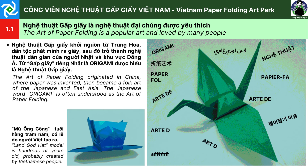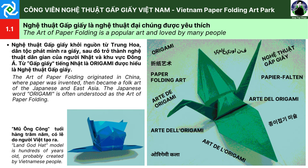1.1. Nghệ thuật gấp giấy là nghệ thuật đại chúng được yêu thích. Nghệ thuật gấp giấy khởi nguồn từ Trung Hoa, dân tộc phát minh ra giấy, sau đó trở thành nghệ thuật dân gian của người Nhật và khu vực Đông Á. Từ gấp giấy theo tiếng Nhật là origami, thường được hiểu là nghệ thuật gấp giấy.